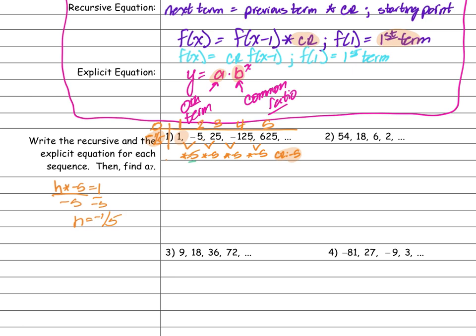I have my common ratio, my first term, and my zeroth term — everything I need to write both equations. My recursive equation: f(x) = f(x−1) · (−5), and f(1) = 1. My explicit equation: f(x) = (−1/5) · (−5)^x.